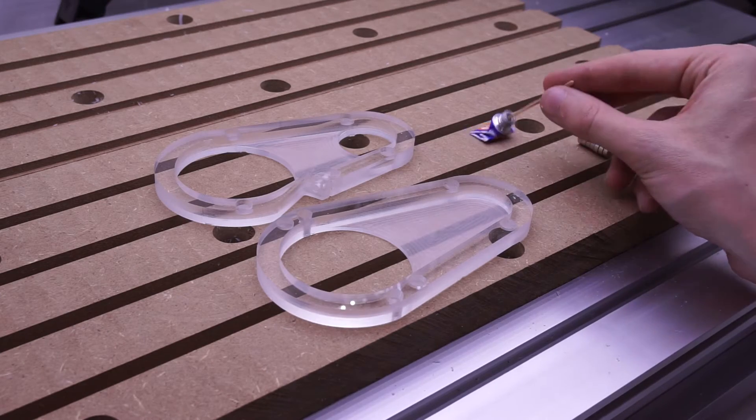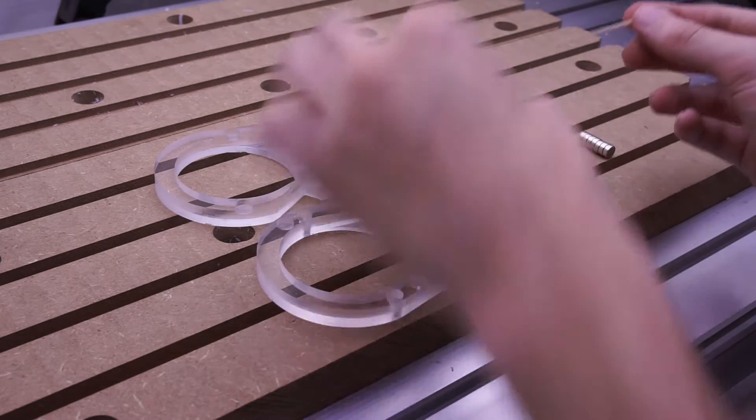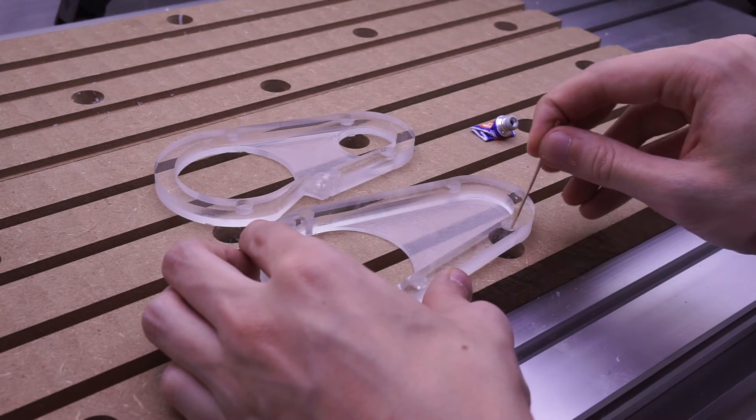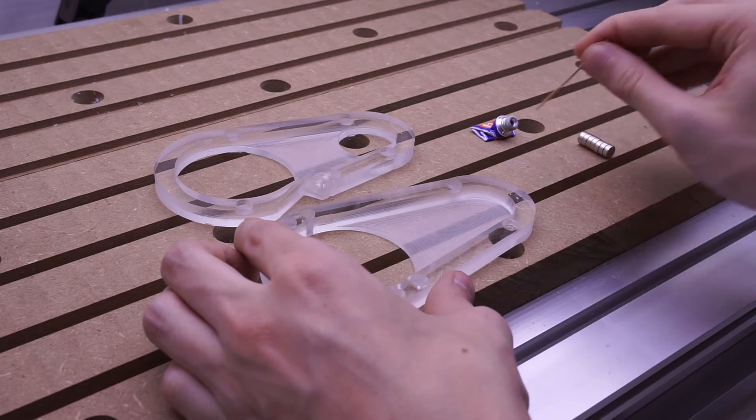Next I glue on the earth magnets. Make sure that all magnets are facing the right way, else you may end up with two parts that repel each other.